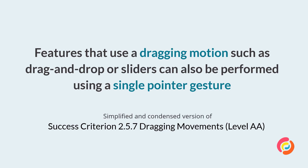On to our four double-A criteria. Our next one is 2.5.7, Dragging Movements. In plain language, this requires that features using a dragging motion — like drag and drop or sliders — can also be performed using a single pointer gesture without the need to drag, such as a single or double tap or mouse press. This new requirement makes sure that people who cannot perform a dragging motion, whether due to limited dexterity or their input device, are still able to do everything they need to do. It doesn't mean you can't use the dragging feature, just that there needs to be an alternative that everyone can perform.